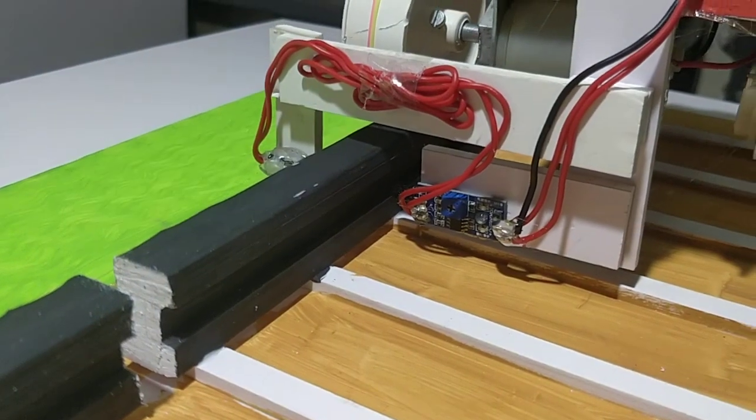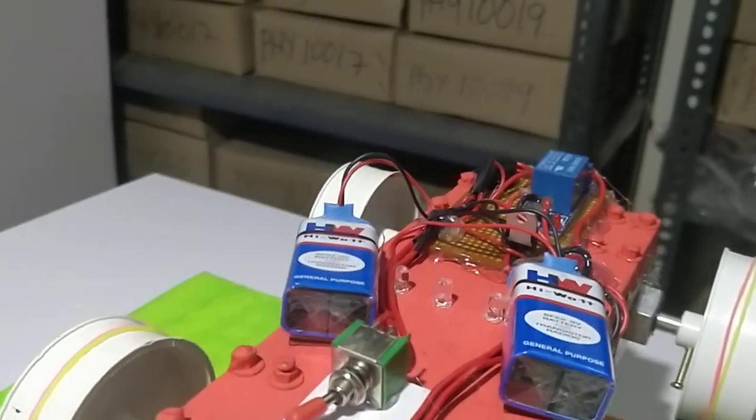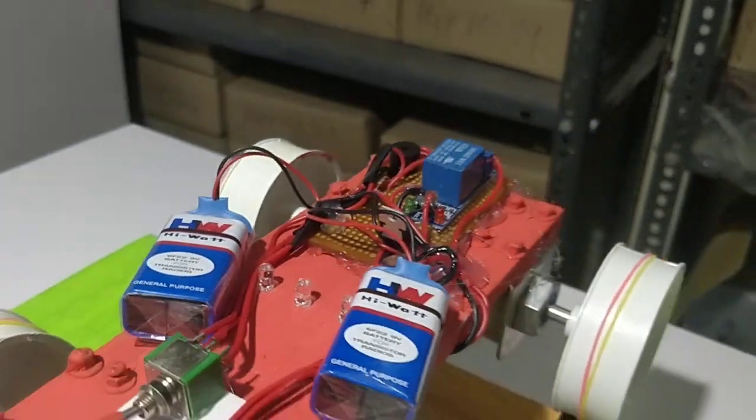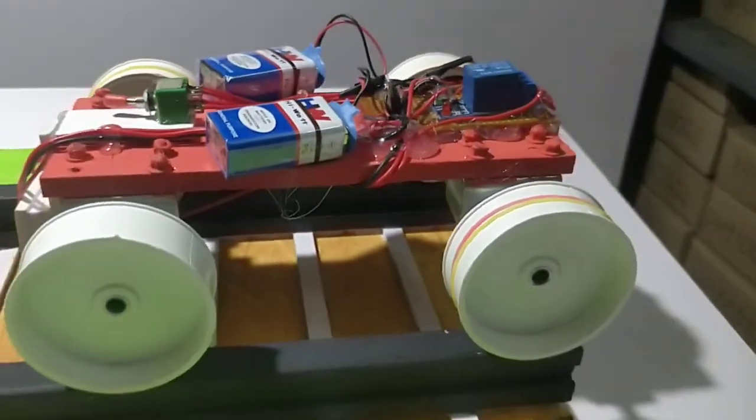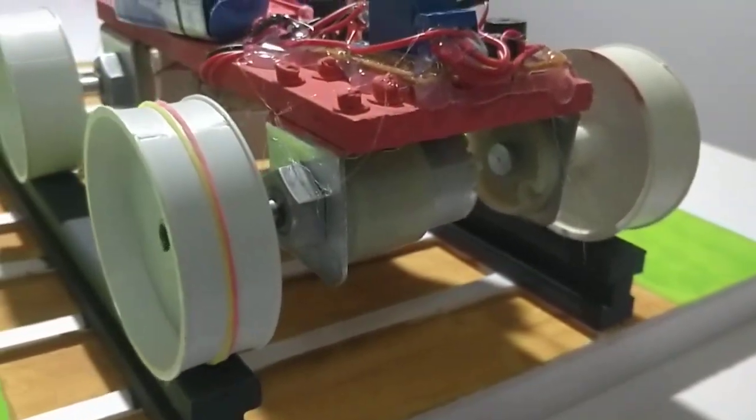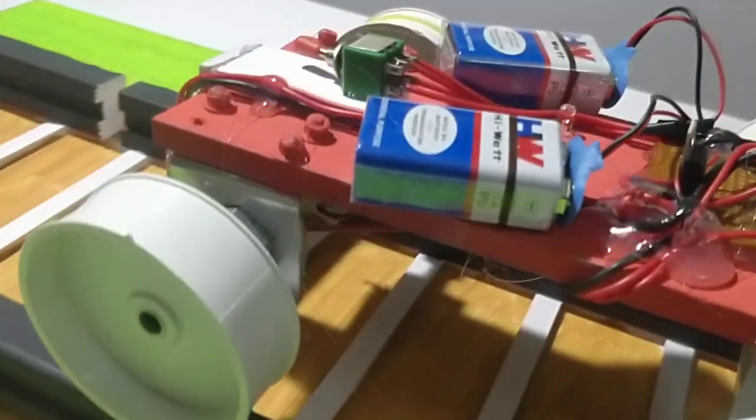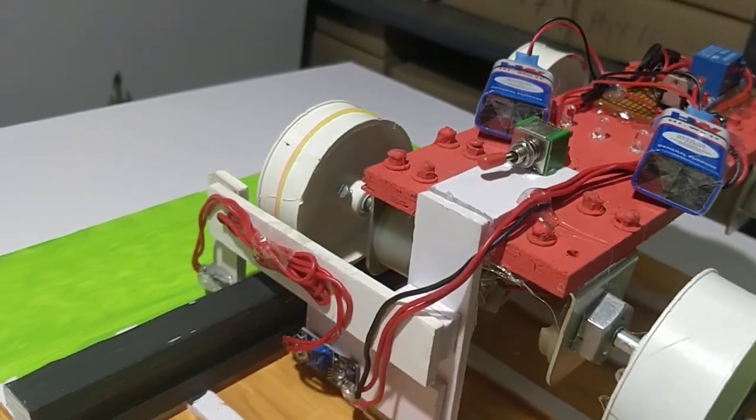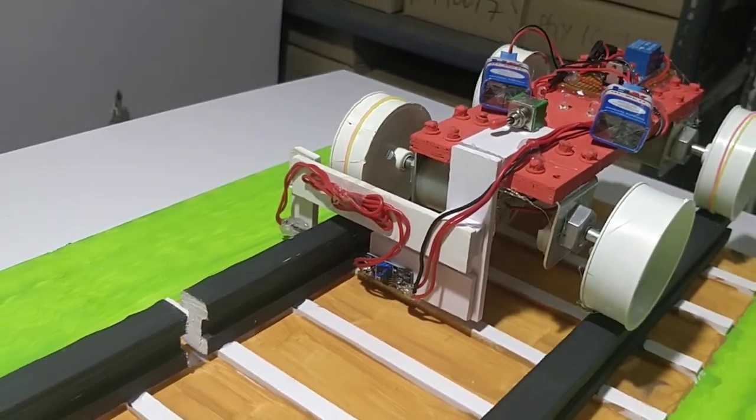For this purpose, we are using an IR sensor and some circuit, a power supply, and a switch for operating purposes, and some wheels are arranged and some DC motors are used. This is the overview of a crack-detecting robot on the railway track.